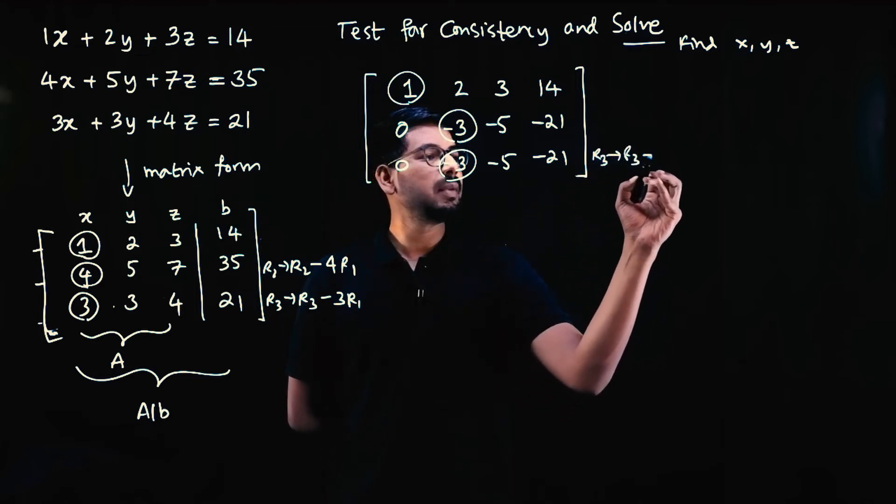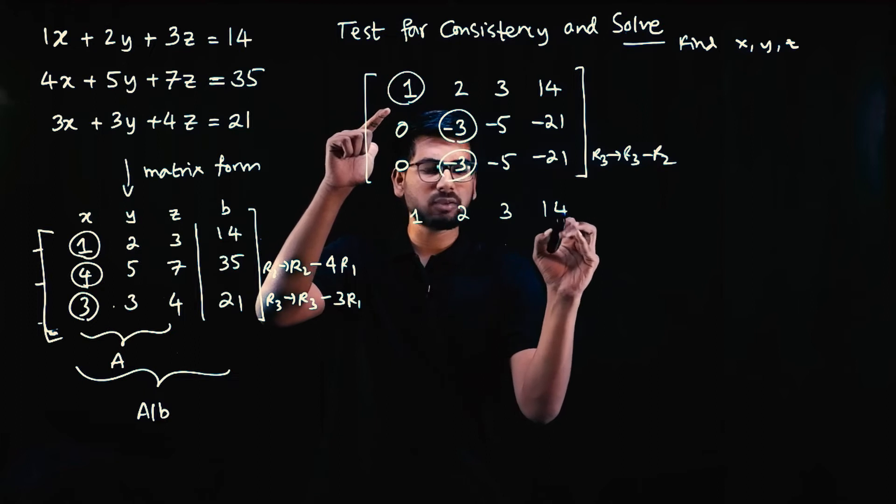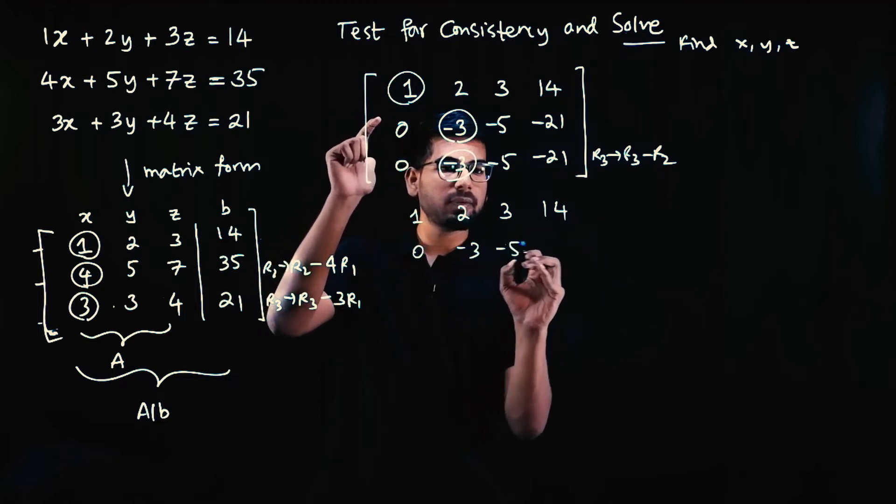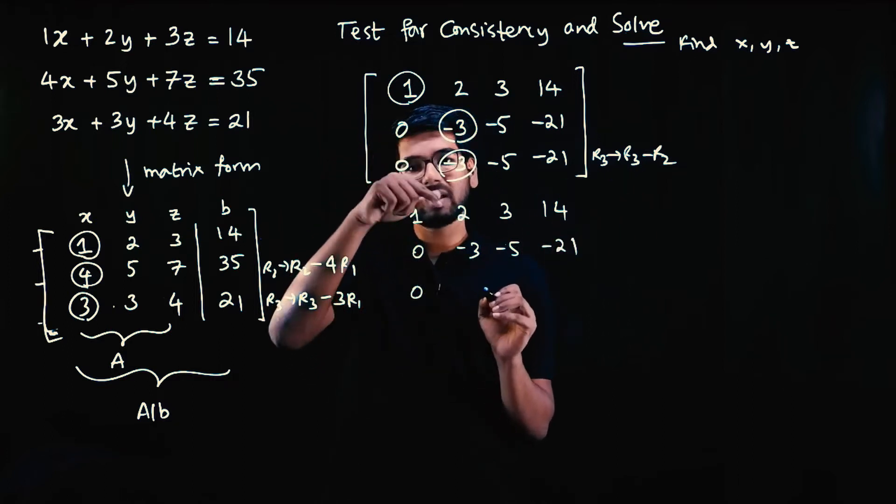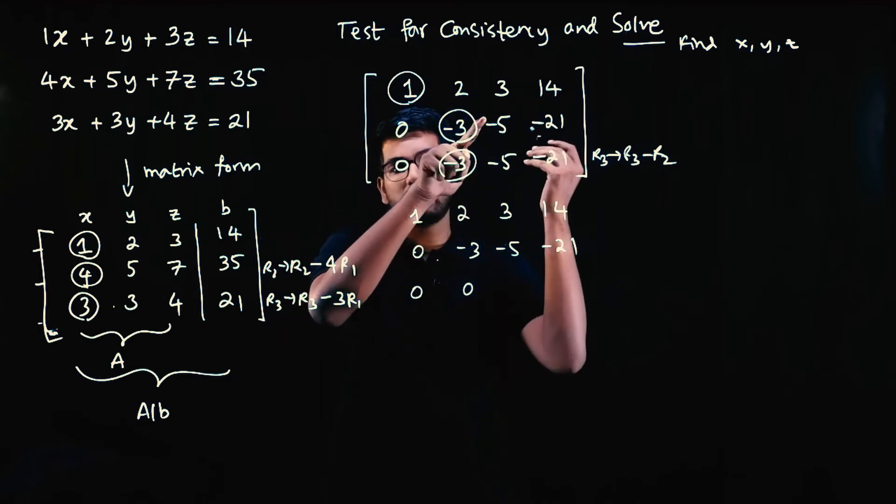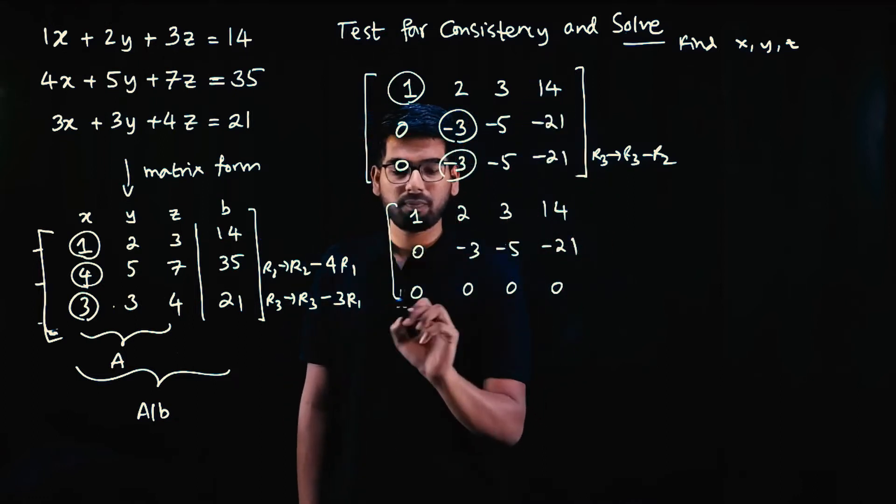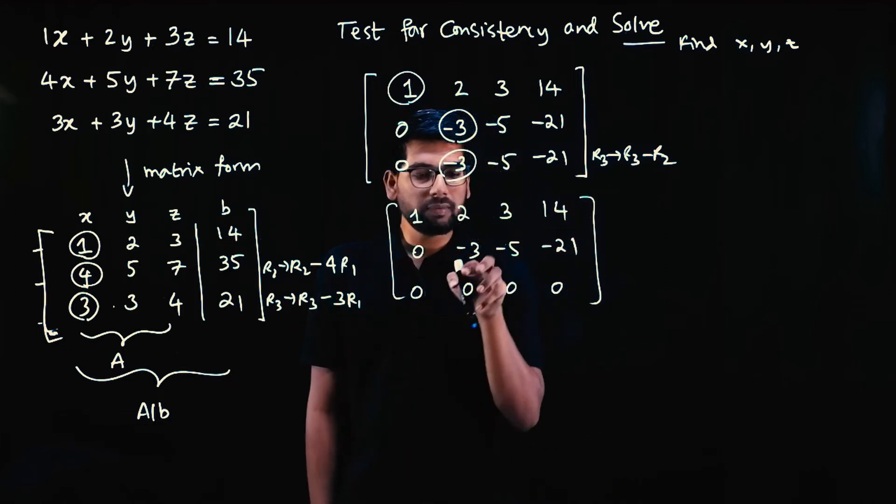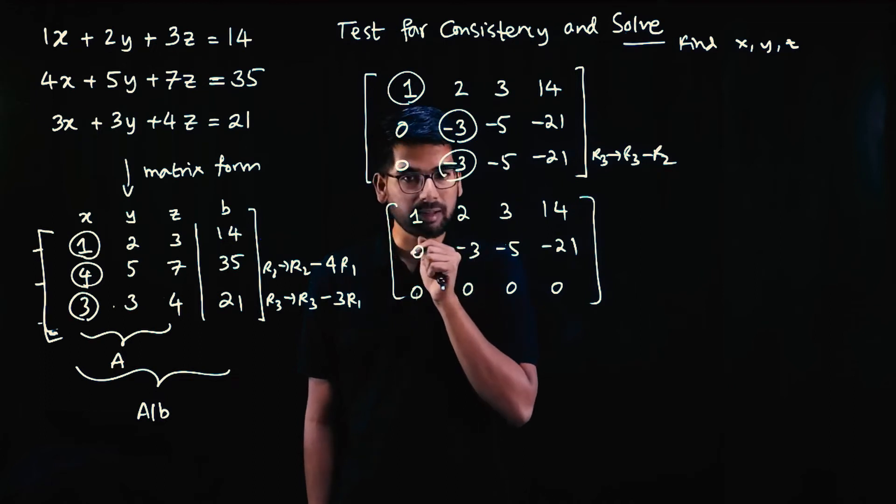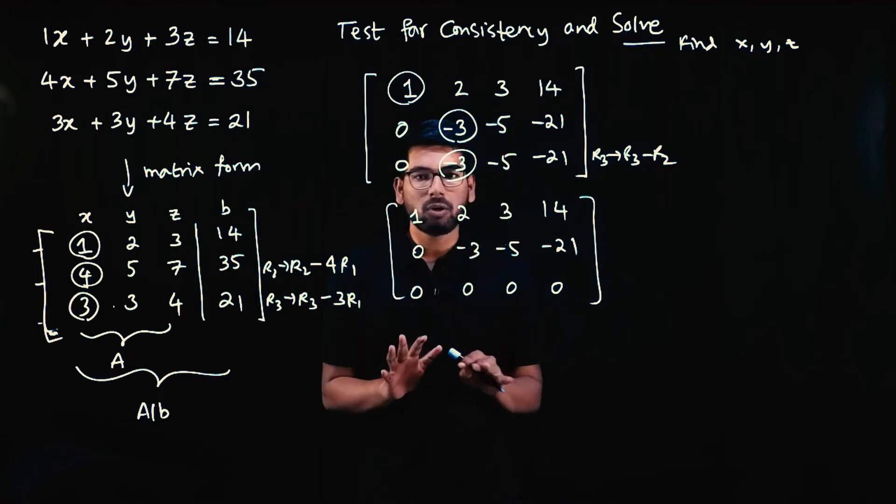The operation gives: 1, 2, 3, 14 unchanged. 0, minus 3, minus 5, minus 21 unchanged. Third row: 0 minus 0 is 0. Minus 3 minus minus 3 is 0. Minus 5 minus minus 5 is 0. Minus 21 minus minus 21 is 0. After three row operations, we got one zero row. We cannot make this row 0 because using this row to make that 0 will change this 0. Row operations end after three operations.